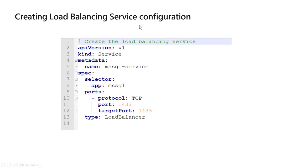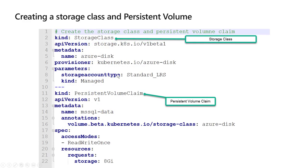Let's understand the load balancing service configuration. Here we are creating a service - earlier we were creating a deployment, this is a service. This is the service name and this service will be running on TCP port 1433. As you are already aware, SQL Server always runs on port 1433. So we are creating the same service here and all applications will connect to this service, which will in turn connect to the pod we described earlier.